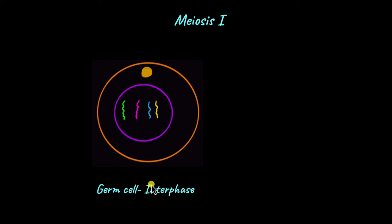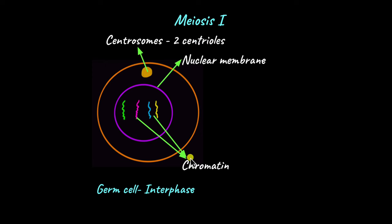Before we begin with the stages in meiosis 1, let us recall how the cell looks like in interphase. Remember that in interphase, DNA exists in the form of chromatin and the centrosomes are present. Each cell has only one centrosome that is made up of 2 centrioles. The nuclear membrane is still intact, and the cell has not begun to undergo meiosis yet.